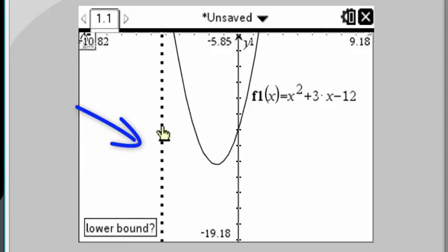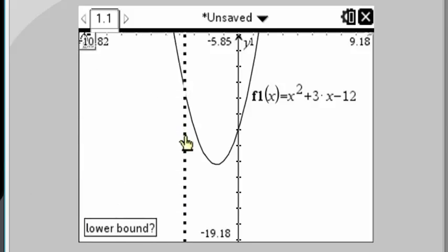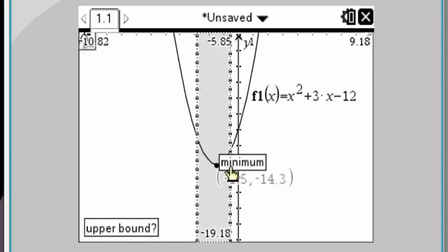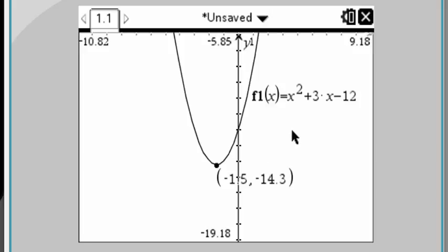Now it's asking you for a lower bound. And as you move the cursor over the screen, it's asking you to define a region. So you're going to position this to the left of the lowest point of your function and then either click or press enter. And then move it to the right of the lowest part of your parabola and press enter again. And there we go.